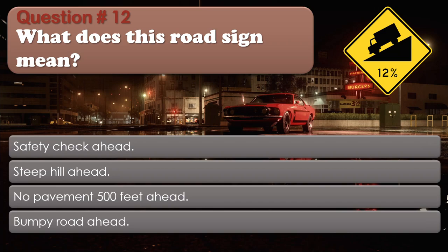Question number 12: What does this road sign mean? Options: Safety check ahead. Steep hill ahead. No pavement 500 feet ahead. Bumpy road ahead. The correct answer is Steep hill ahead.